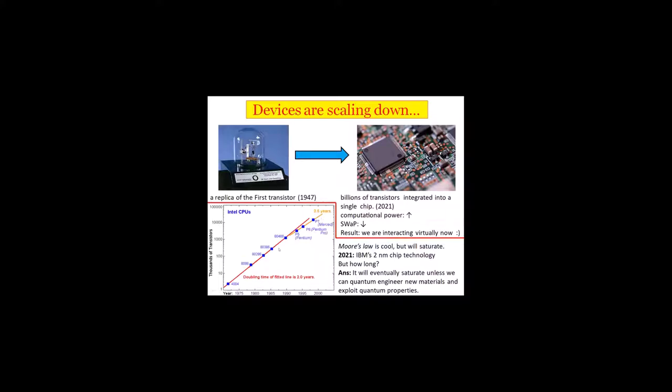There was something called Moore's Law, which claimed that every two years, the number of transistors in a chip will double. But by the end of the 2000s, it was saturating. Today we are clear that unless we can engineer novel properties of devices and quantum materials, it will eventually saturate. Recently, IBM introduced a two-nanometer chip technology, but how long can this continue? You cannot fit infinite transistors into a finite-sized chip. You have to exploit quantum mechanical properties.